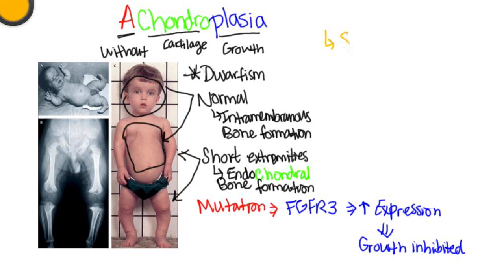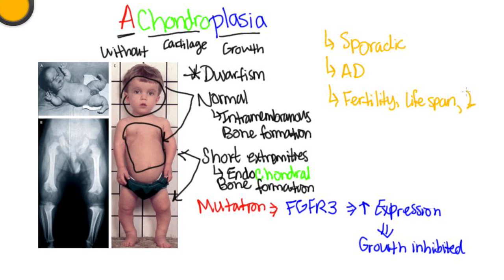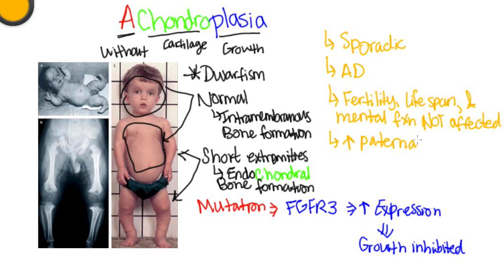Achondroplasia tends to be sporadic and has an autosomal dominant inheritance pattern. Fertility, lifespan, and mental function are not affected in these individuals, so they have normal fertility, lifespan, and mental function. The incidence of achondroplasia increases with increased paternal age.